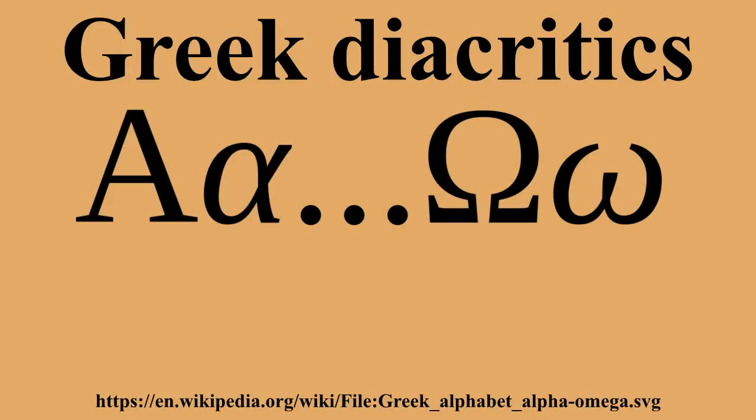During the Hellenistic period, Aristophanes of Byzantium introduced the breathings, marks of aspiration, and the accents, of which the use started to spread to become standard in the Middle Ages. It wasn't until the 2nd century AD that the accents and breathings appeared sporadically in the papyri. The need for the diacritics arose from the gradual divergence between spelling and pronunciation.